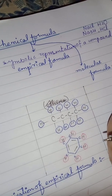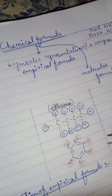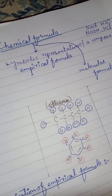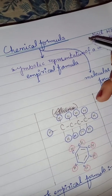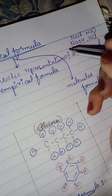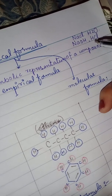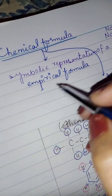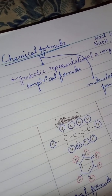Assalamu alaikum dear students. Today I am going to tell you about the chemical formula. Basically, if I say NaCl, H2O, NaOH, or HCl — I mean sodium chloride, water, sodium hydroxide, and hydrochloric acid. What I did is I represented these compounds in the form of a symbol. So a chemical formula is a symbolic representation of a compound.